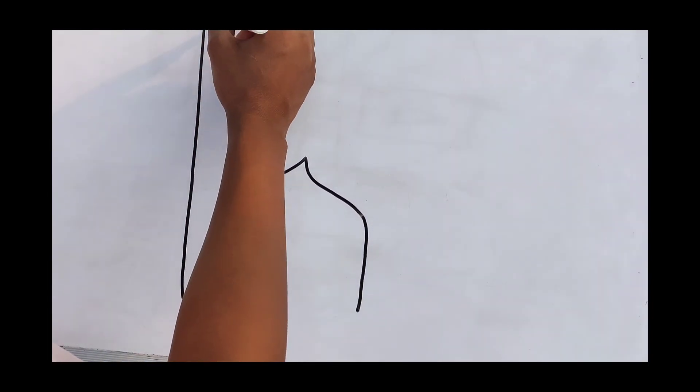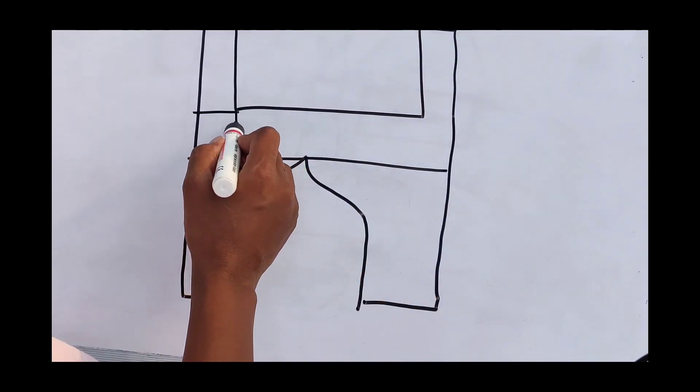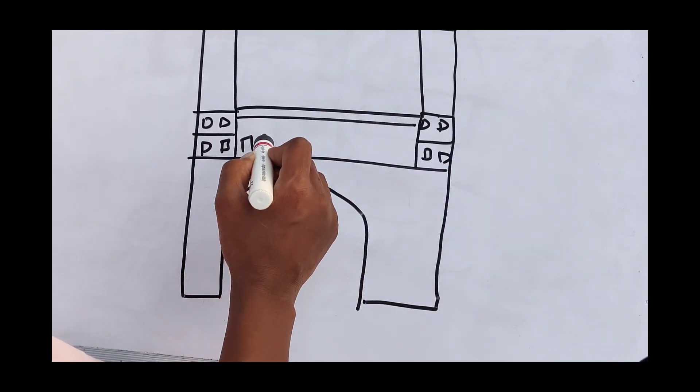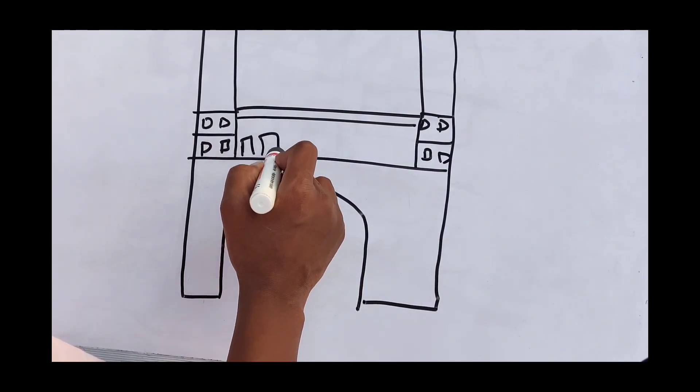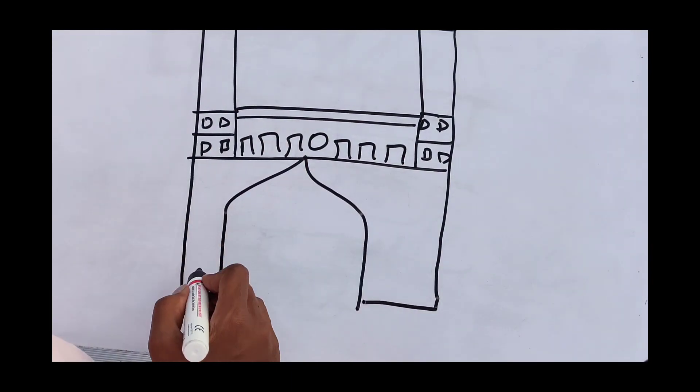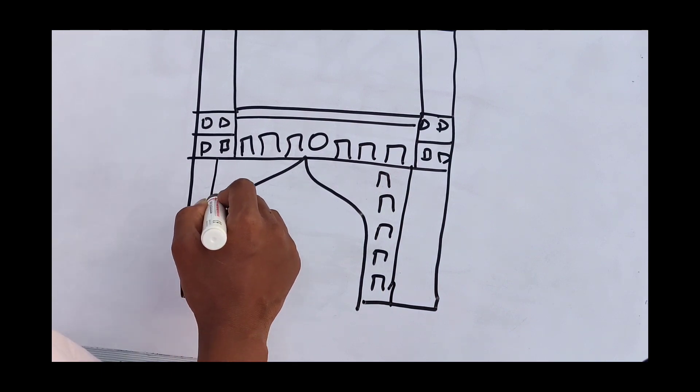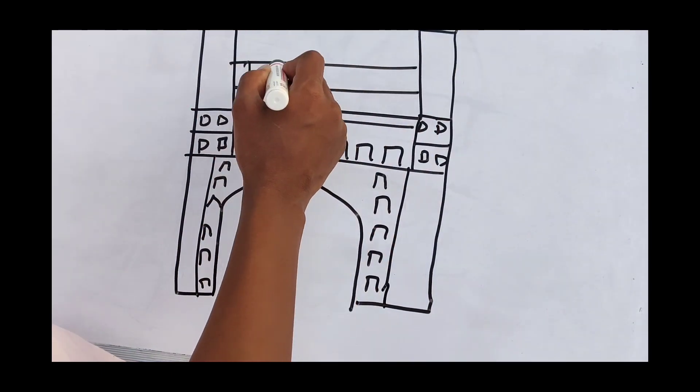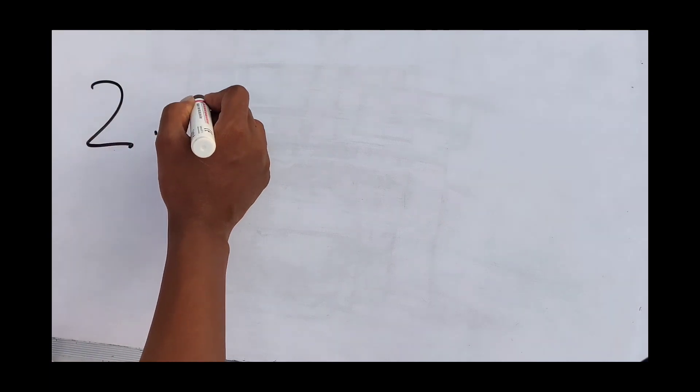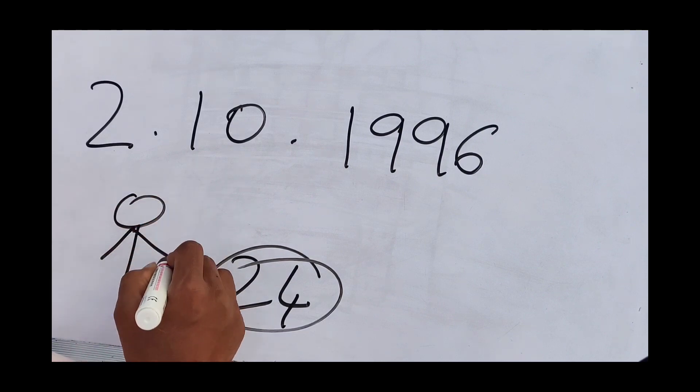So this is nothing but Charminar. I mean, that represents Hyderabad, so I am from Hyderabad basically. Excuse my drawing, bear with it. I don't have a native proper village type, so every time there's a vacation my friends and cousins will be visiting their grandparents' village and I'm kind of sad that I don't have any, but it's okay. I'm born on 2nd of October 1996, and that makes me 24 years old. Yes, I'm 24 but I don't look like one. I kind of look very young.